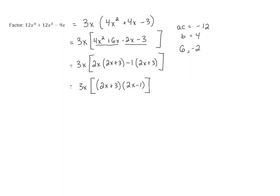And the very last thing is that we drop the brackets. In the end, we will not need them because all of this is multiplication. This is 3x times 2x plus 3 times 2x minus 1.